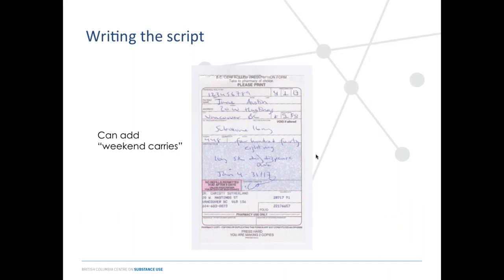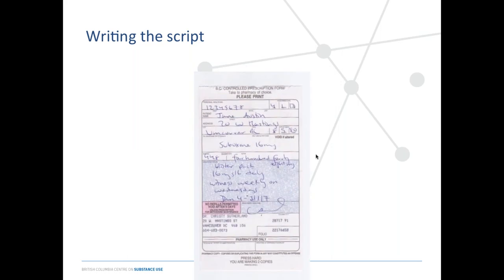Here are some sample scripts. You want to write all patient identifiers — PHN, date of birth, prescribing date, name, address, and the suboxone dose. Indicate the dates, daily witness ingestion (DWI) or daily dispense, the full dose, and sign off with your contact information. For a patient with carries, it would be written as daily in a blister pack, witnessed weekly on a specific day, with the rest as carries.